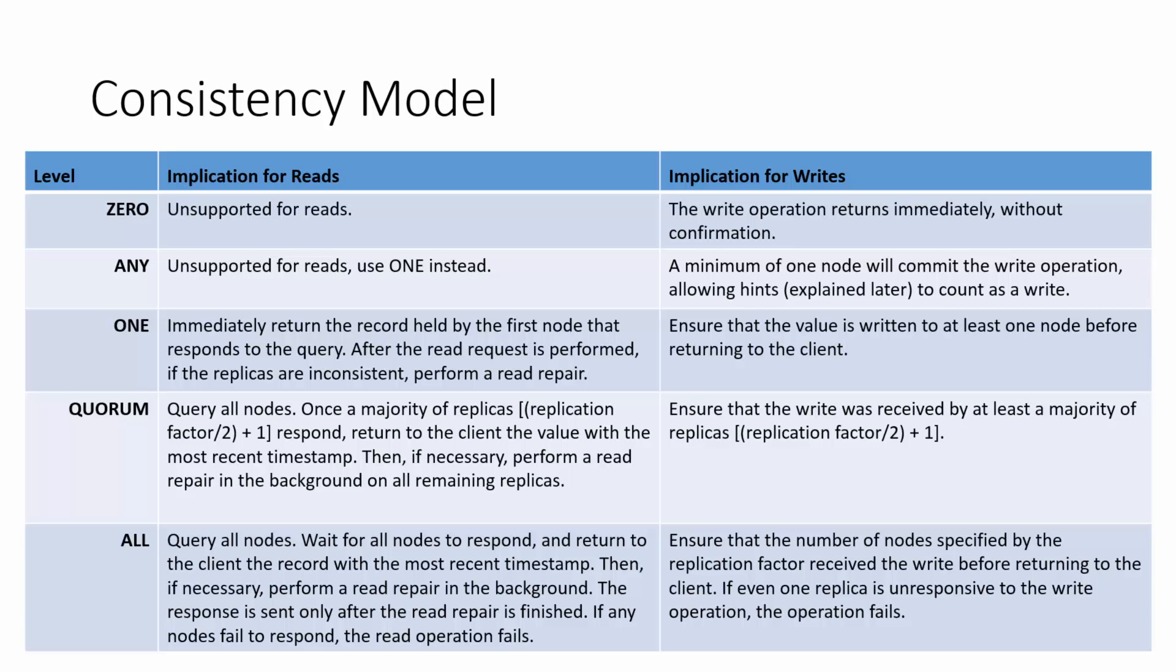For writes, a minimum of one node will commit the write operation, and in case of a node failure they can use a hint. For reads using the ONE level, you immediately return the record that is held by the first node that responds to the query. After the read request is performed, if there is any inconsistency in the replicas which can be figured out by comparing the Merkle trees, a read repair operation is performed. In writes using the ONE level, this ensures that the write updates the value of that particular key to at least one node before returning to the client.